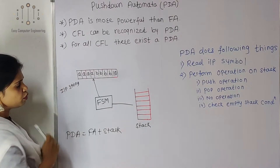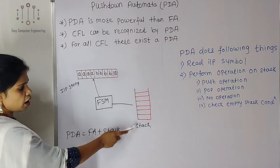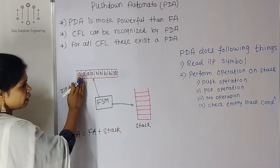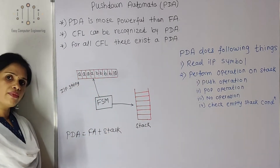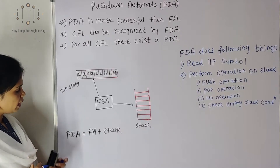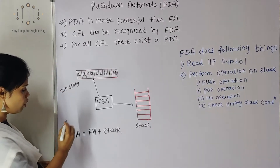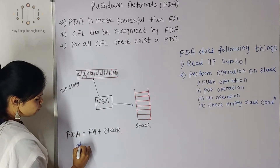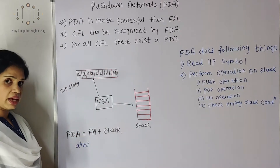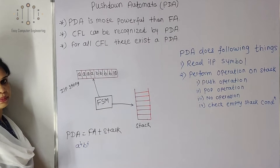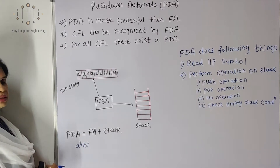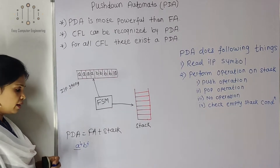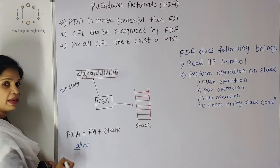Now let's see how pushdown automata works. Consider this input string — finite automata along with a stack. We are reading characters one by one, just like finite automata. Taking the example of Aⁿ Bⁿ, with string A⁴ B⁴, we will check how this string is accepted. The logic is: we will push all the A's into the stack, and whenever we encounter B characters, we will pop.